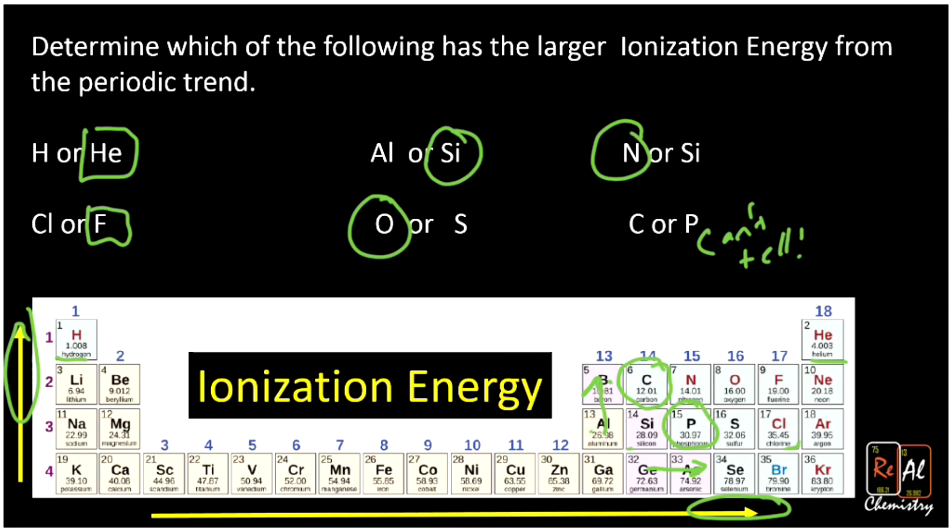That's how we use periodic trends to predict and compare the properties of different elements based on their position on the periodic table. There are tons of other trends — these are just two of many — but once you get the basic process and look up the trend for other properties, those are pretty straightforward as well.